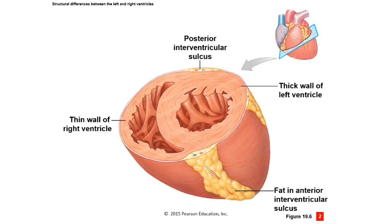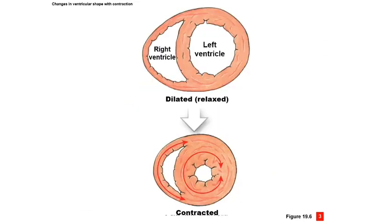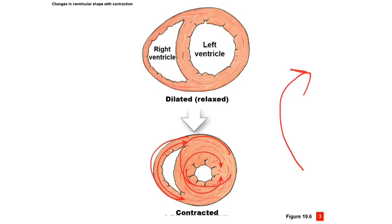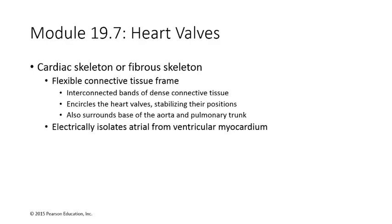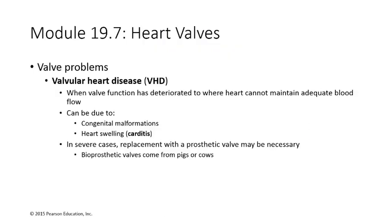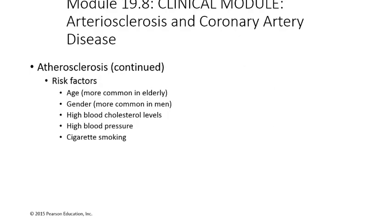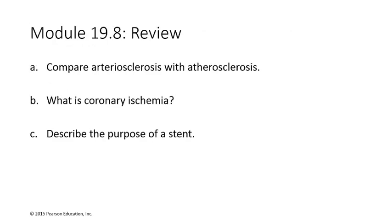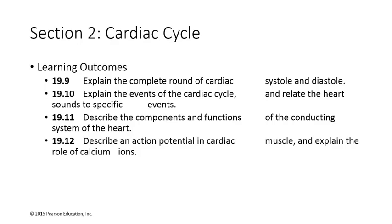Recall that the left side is much more muscular — it has a much thicker myocardium than the right side. When the heart contracts, it does so in a wringing motion, squeezing and twisting simultaneously, which drives blood up and out of the ventricles. The semilunar valves are toward the base of the heart, so the blood must be squeezed up and out through those valves. That brings us up to where we'll pick up with new information this semester.